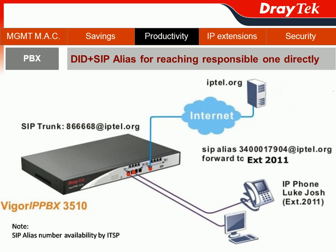The NIS, or system admin, would like to assign one SIP alias number — 343017904 — for forwarding to extension 2011 belonging to Luke George. So Luke can pick up the customer phone call directly from the SIP trunk.